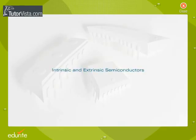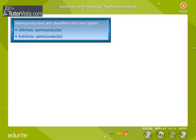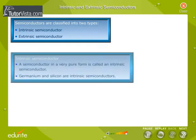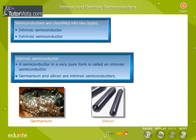Intrinsic and Extrinsic Semiconductors. Semiconductors are classified into two types, namely Intrinsic Semiconductor and Extrinsic Semiconductor. A semiconductor in a very pure form is called an intrinsic semiconductor. Germanium and silicon are intrinsic semiconductors.